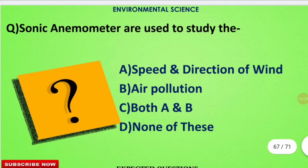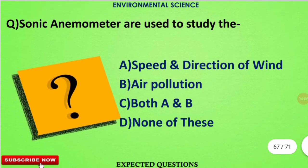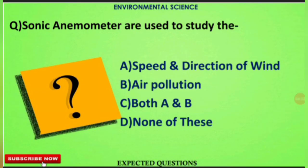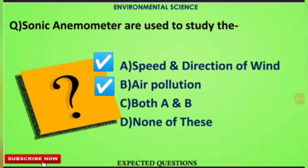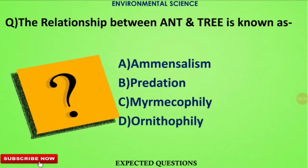The next question is about environmental instruments: sonic anemometers are used to study what? The correct option is C. The sonic anemometer is used for air pollution monitoring as well as to detect the speed and direction of wind.